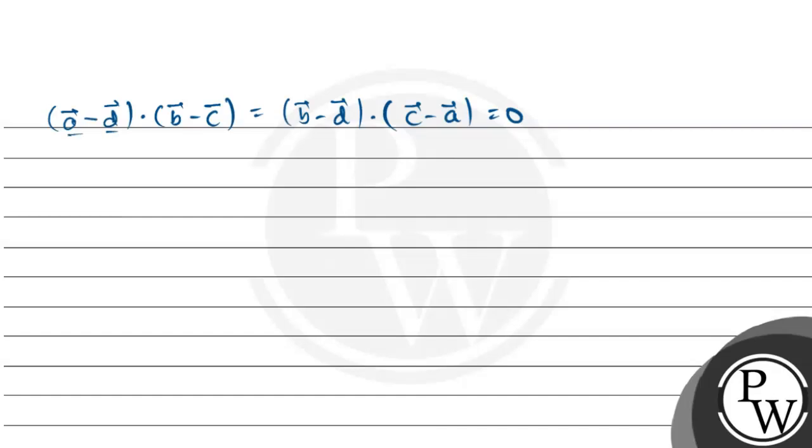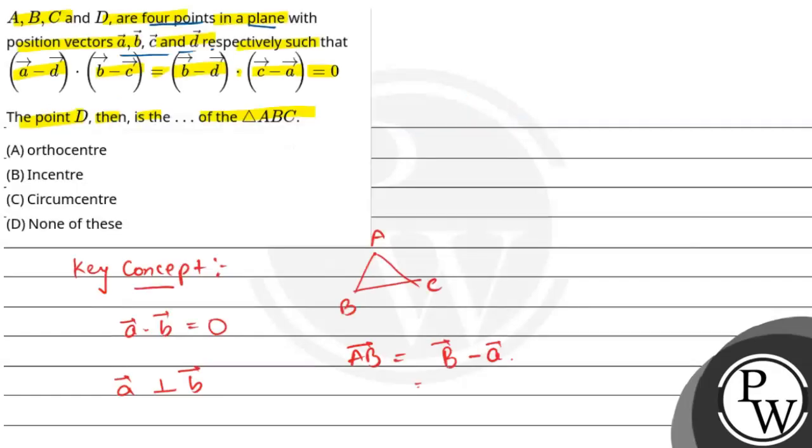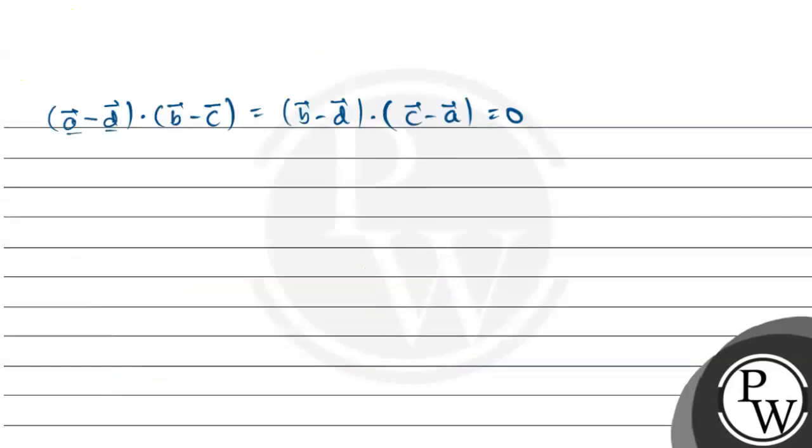What do we have to do here? A, B, C, D are four points with position vectors a, b, c, and d. Since the dot product equals 0, the vectors must be perpendicular.